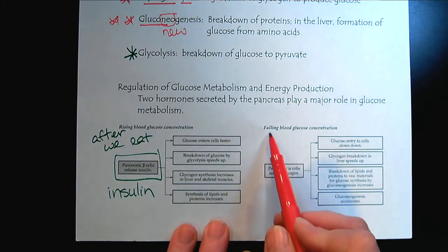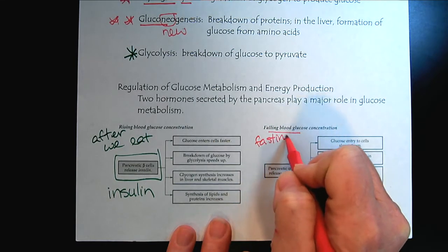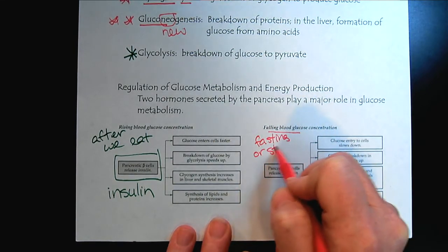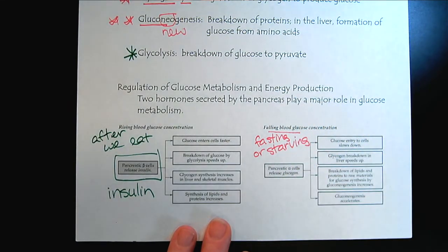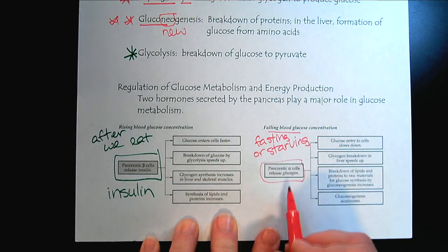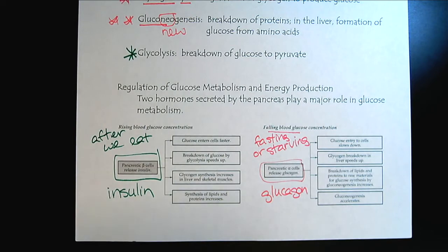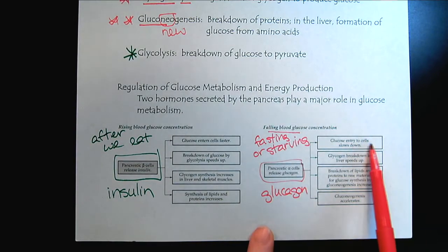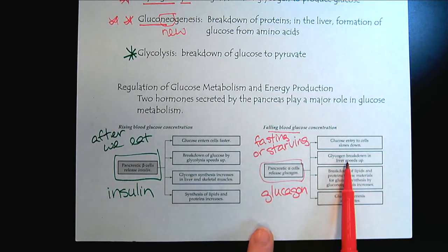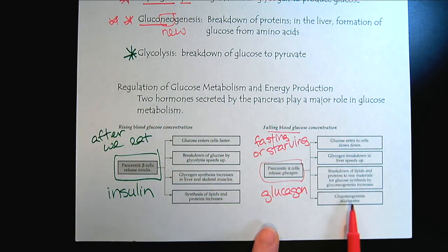When we have a falling blood glucose level, this means we've either been fasting or starving — sometimes intentional, sometimes not. The pancreatic alpha cells will release glucagon. Glucagon signals that glucose entry to the cells has slowed down, so we have to start breaking down glycogen and look at other sources of energy, breaking down proteins to get glucose — and that's where gluconeogenesis starts.